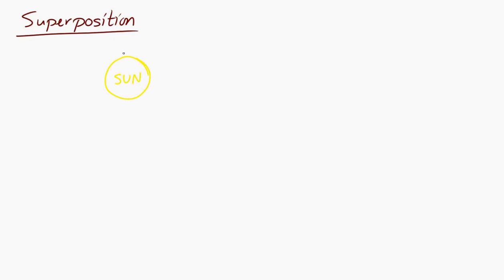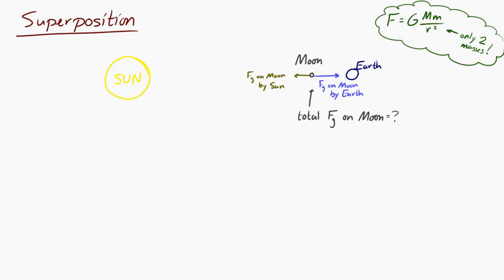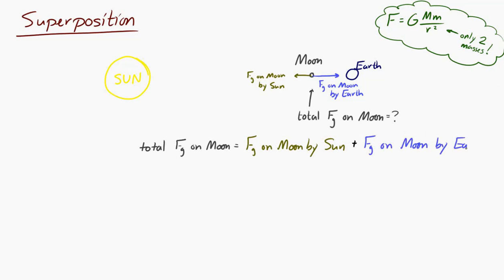Now let's consider a situation with three masses. The equation only has two masses in it — so what do we do? Say we have the Sun, Moon, and Earth, and we want the total gravitational force on the Moon. First find the gravitational force on the Moon by the Sun, then find the gravitational force on the Moon by the Earth — it's in the opposite direction. The total gravitational force on the Moon is the vector sum of those two forces, because you have to take direction into account.